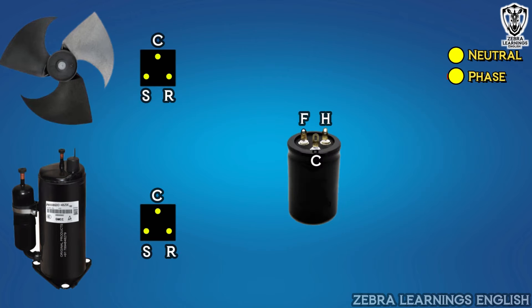Now, one terminal from the phase should be connected to the common of the capacitor. Then, connect from this common terminal to the running terminal of the compressor and the running terminal of the fan motor.